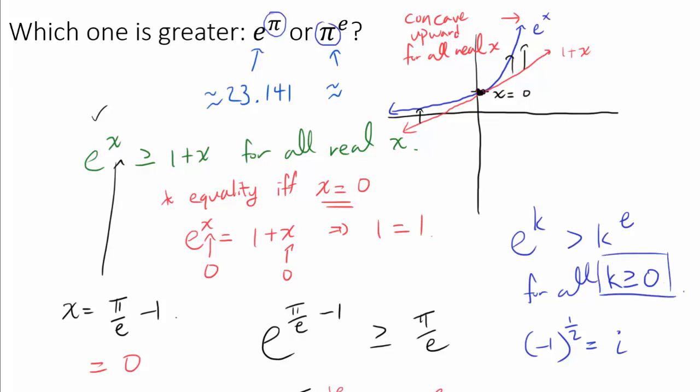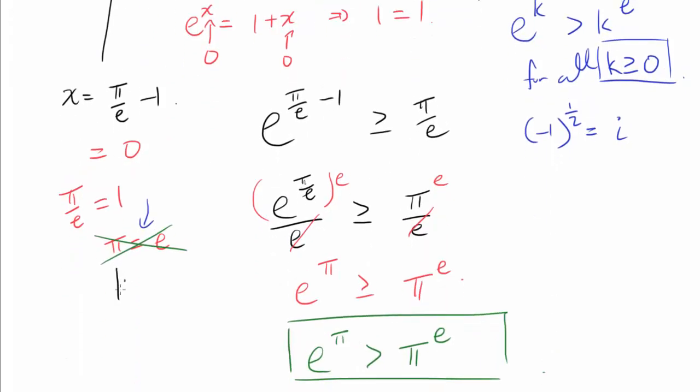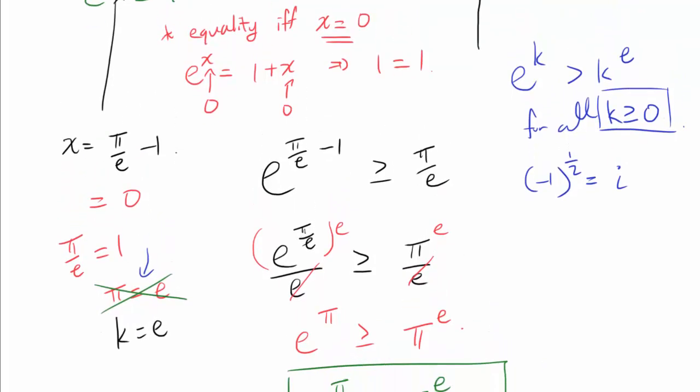And of course, it looks like we may have the equality when our value of k is equal to e. So it looks like we have the equality if and only if k is equal to e. And we see, if we plug in e to k, we get e to the e is equal to e to the e. So we do have equality when k is e.